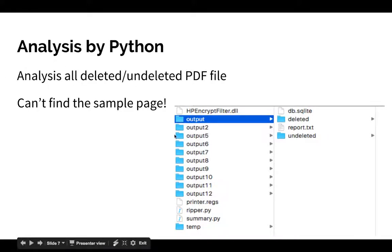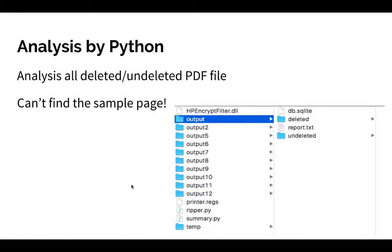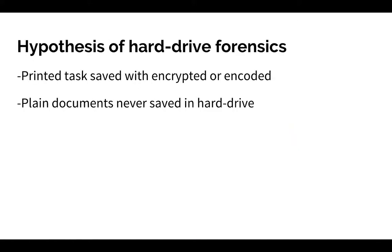After running the analysis with the Python script, we could not find the printed sample page from the results — even though we did find other PDF files like the printer's test page. I formed two hypotheses: first, the printed job may be saved with encryption or encoding, so we cannot use Sleuth Kit to get the print job directly.